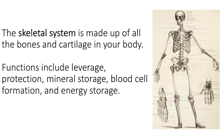Some bones don't act as levers at all — they're more protective in nature. The cranium protects your brain, the vertebral column protects the spinal cord, the pelvis protects the reproductive organs and the kidneys, and the rib cage protects your heart and your lungs. That's a really important function. Mineral storage is another function — we store calcium and phosphate in the bone.